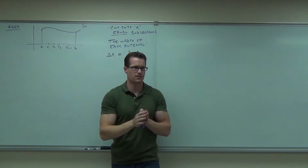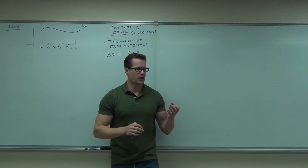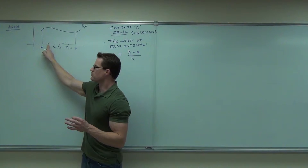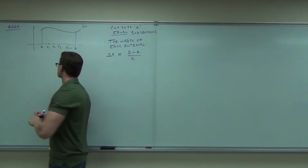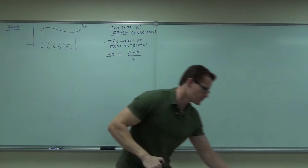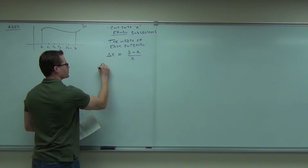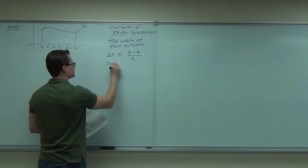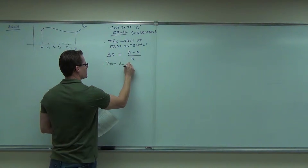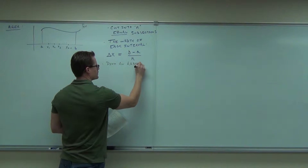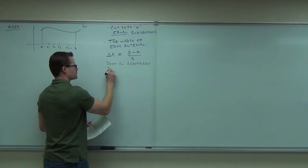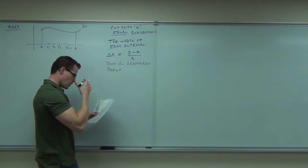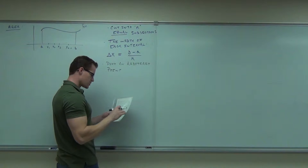Here's how we're going to find the height. What you're going to do is pick an arbitrary point — somewhere in each interval. What does arbitrary mean? Just random. You're going to find out that it's not going to make a difference at the end of our problem. Pick an arbitrary point for each sub-interval.